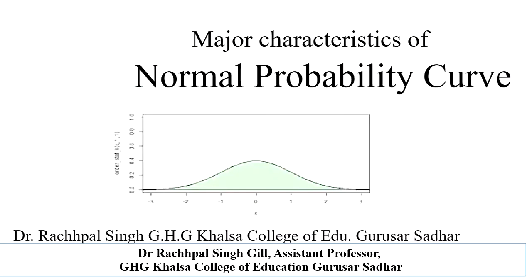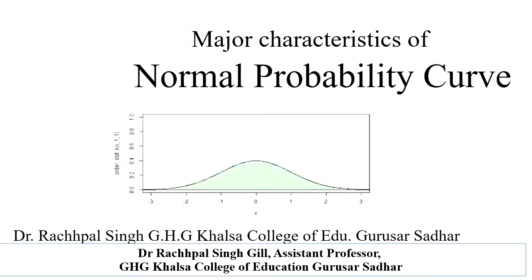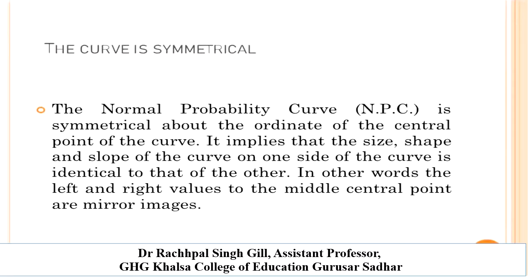Moving toward the basic characteristics or properties of the normal probability curve. The first characteristic is that the mean, median, and mode coincide — meaning they lie at the same point. The mean, median, and mode of the normal distribution are the same and lie at the center. They are represented by zero along the baseline. As we observe, mean, median, and mode lie at the same point and all are equal.